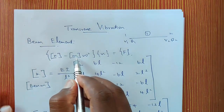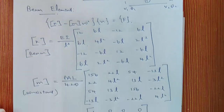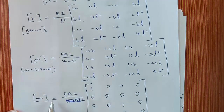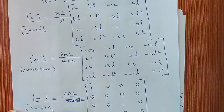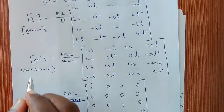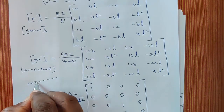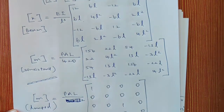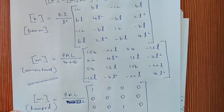M is the mass matrix. There are two types of mass matrix: one is the consistent mass matrix and another is the lumped mass matrix. In the consistent mass matrix, the mass is uniformly distributed throughout the element. In the case of the lumped mass matrix, the mass is accumulated only at the nodal points.